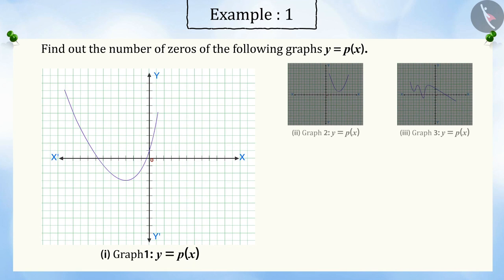Correct! This graph intersects the x-axis at two points. Hence, the number of zeros would also be two.